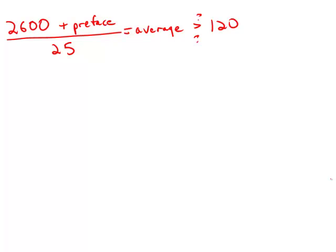Well, one thing that I notice is that if we multiply 120 times 25, we get 3,000. Or another way to say that is that 3,000 divided by 25 equals 120.